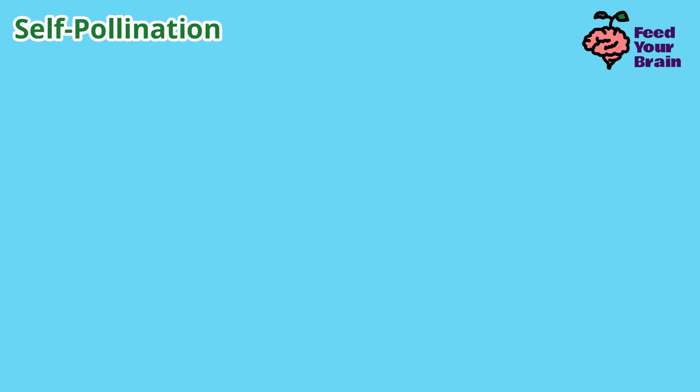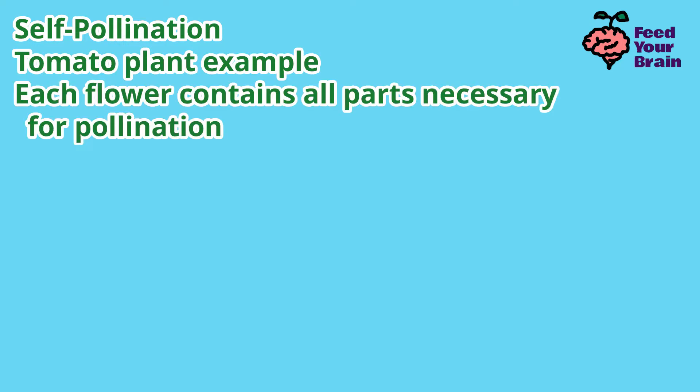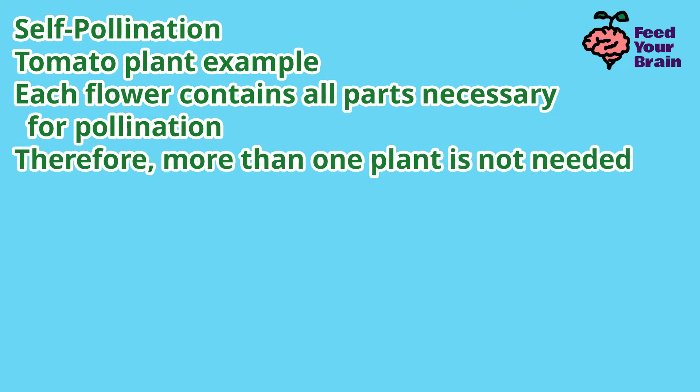Then there is self-pollination. A tomato plant is an example. Each flower contains all parts necessary for pollination, and therefore more than one plant is not needed.